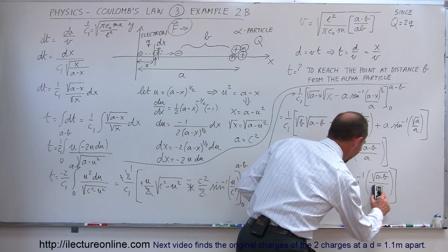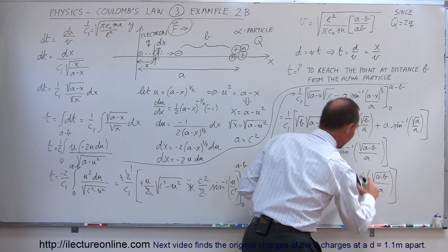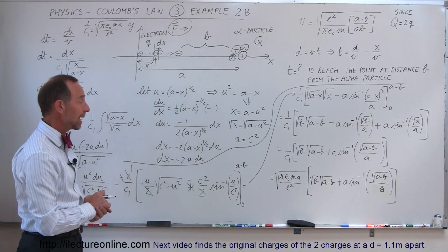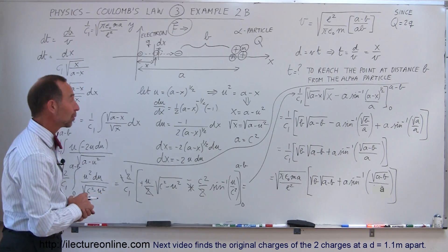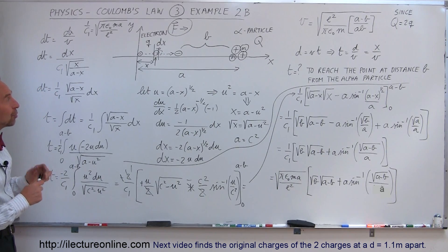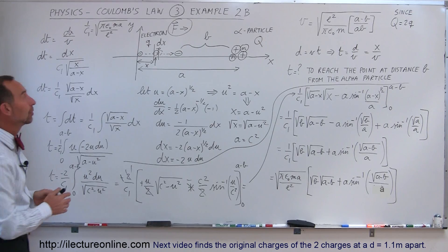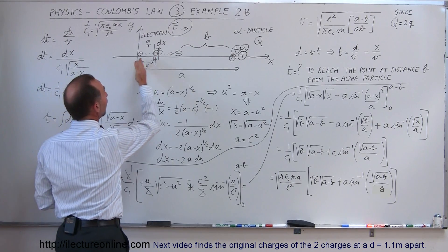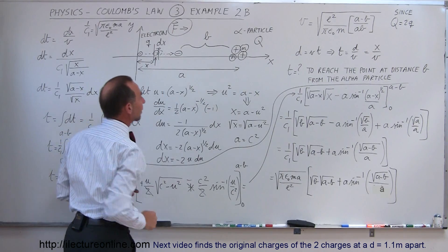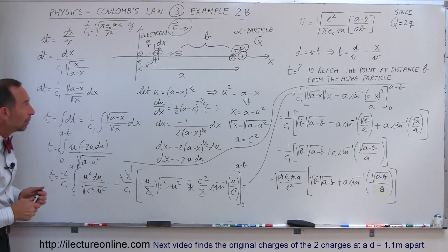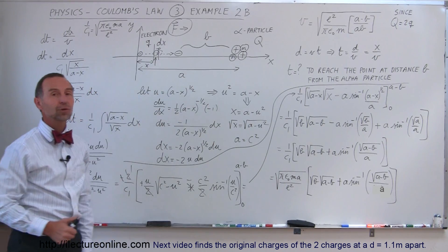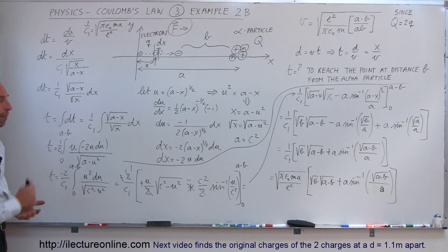Replacing 1 over c1: this equals the square root of π ε₀ times ma, all divided by the electric charge squared, times the square root of b times the square root of (a minus b), plus a times the arc sine of the square root of (a minus b) divided by a. This is an approximate value assuming the square root of b and square root of a are small compared to a. That would be the answer. It gives an interesting view of how Coulomb's law can be used to calculate how fast an electron moves as it approaches an alpha particle, and how long it takes — in both cases requiring integration because force and velocity vary as the electron moves toward the alpha particle.